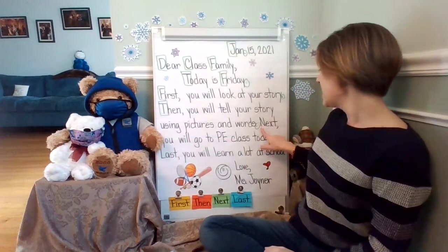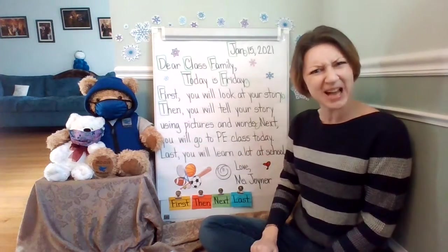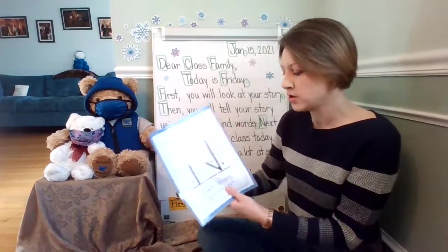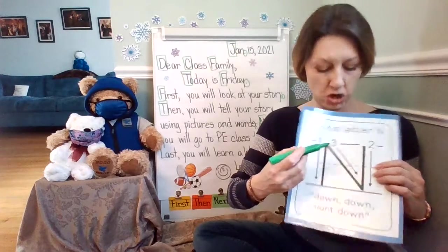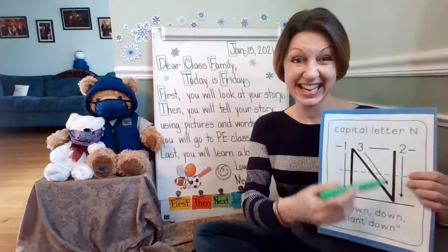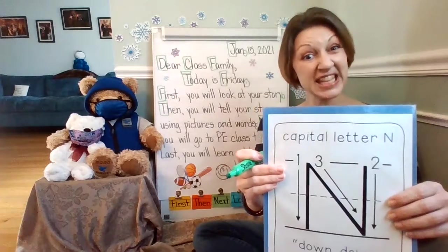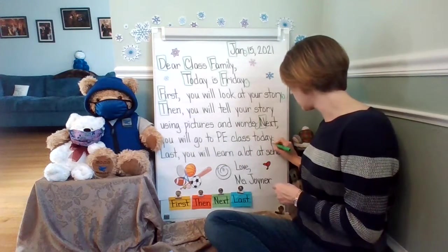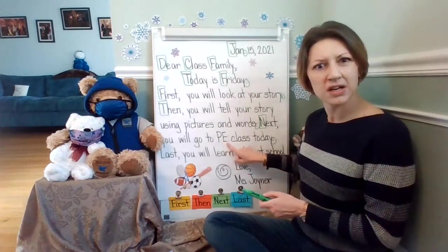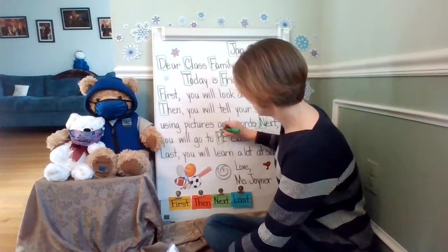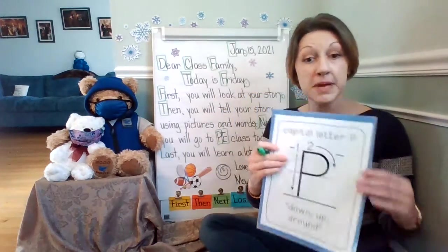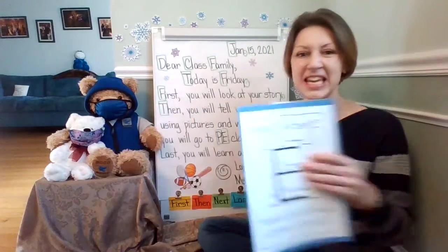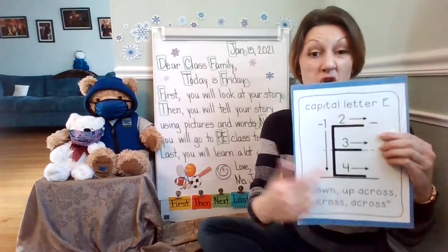Next, you will go to PE class today. I see many capitals. What capital letter is at the start of the sentence? A capital N. When you make an N, you go down, then slant this way, then pick up and down. Look at the end of this sentence — I see a period. And in PE, you have a capital P and a capital E — that's for physical education. When making your E: down, across, across, across.